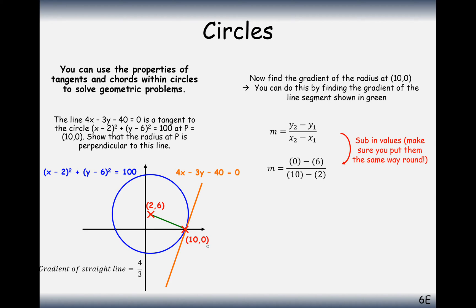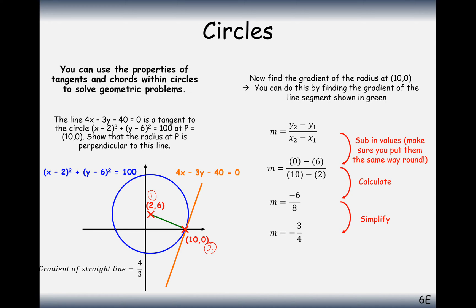We've got one coordinate as coordinate 2 and the other as coordinate 1. That gives us 0 minus 6 from the two y-values, and 10 minus 2 from the two x-values. Substituting those in and simplifying the fraction, we get -3/4.